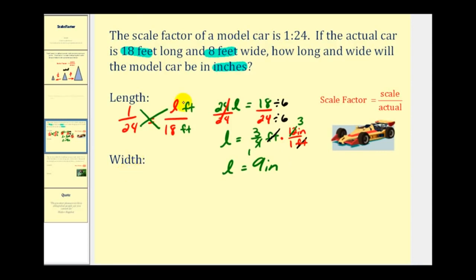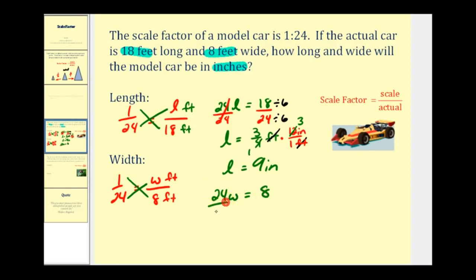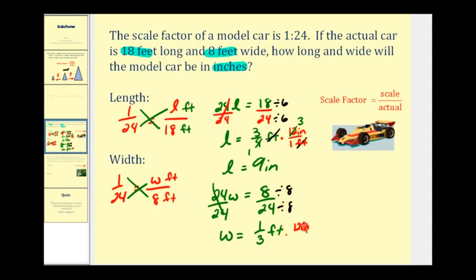Now let's do the same with our width of eight feet. Starting with the scale factor of one to twenty-four, it must equal the scaled width W in feet to eight feet. Cross products give twenty-four W equals one times eight, so W equals eight twenty-fourths, which simplifies to one-third of a foot. Multiplying by twelve inches to one foot, the feet simplify out, giving us a scaled width of four inches.